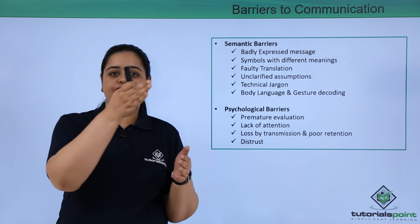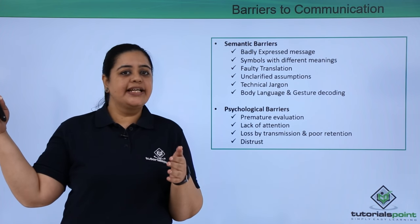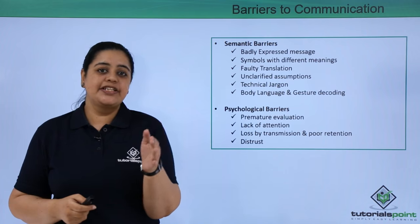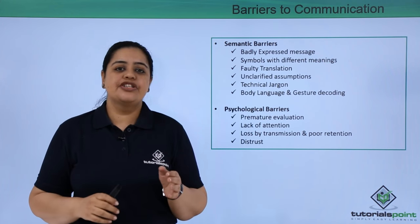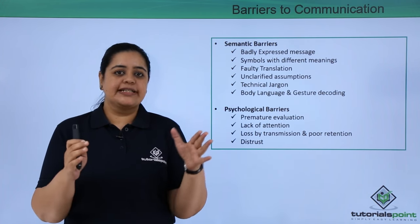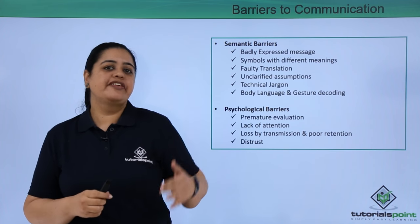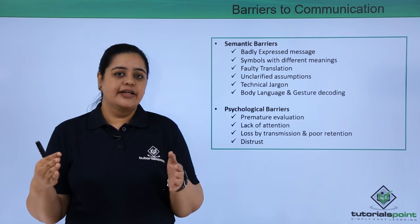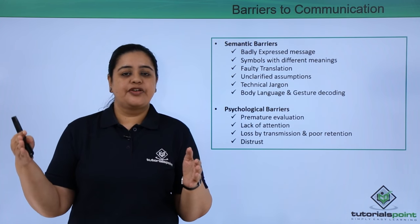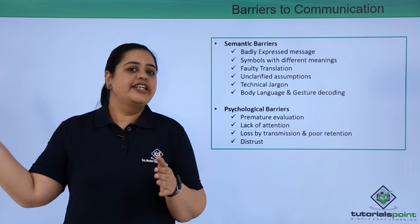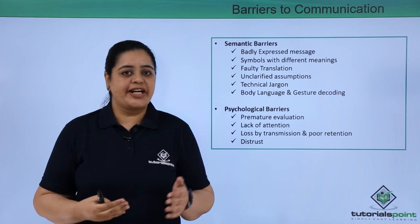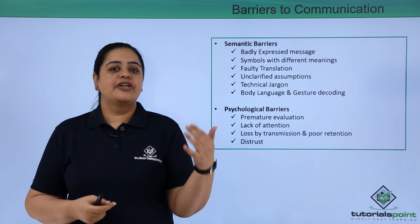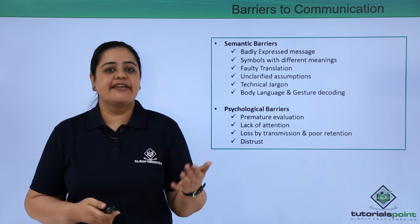There could also be loss of transmission or poor retention. If communication flows from A to B to C to D in a chain, the message loses its original meaning. This is like the childhood game where one person is told a message and has to pass it on — by the tenth person, the message is never the same as the original.